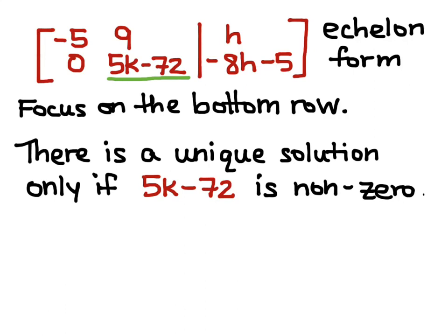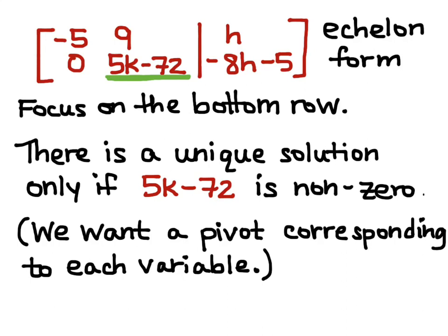So, I want this entry right here to not be equal to 0. In other words, I want to have a pivot in each column, so corresponding to each variable. And if you remember from class, column 1 is my x1 column, and column 2 is my x2 column. The numbers you see in the matrix are the coefficients of those variables.